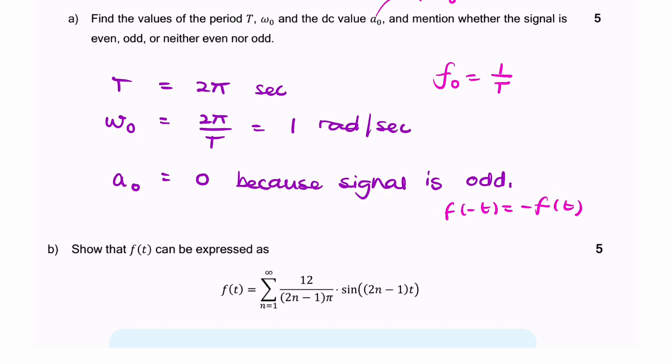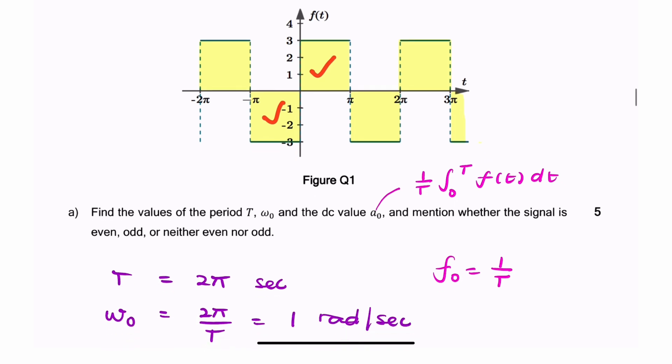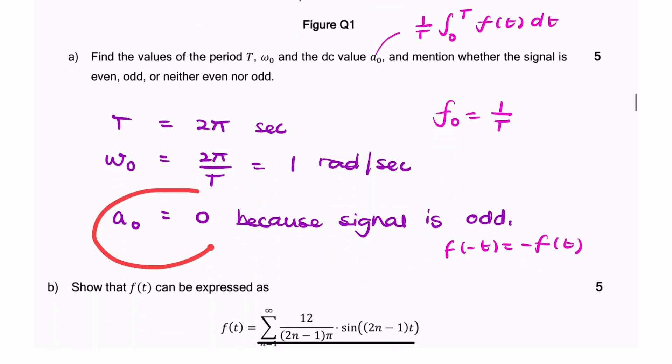So it's odd because f of minus t equals minus f of t for all values of t. Clearly, the average value, or the DC value, is zero, because this area is equal to the negative of this area. So the total DC value is zero. These are your answers for part a.